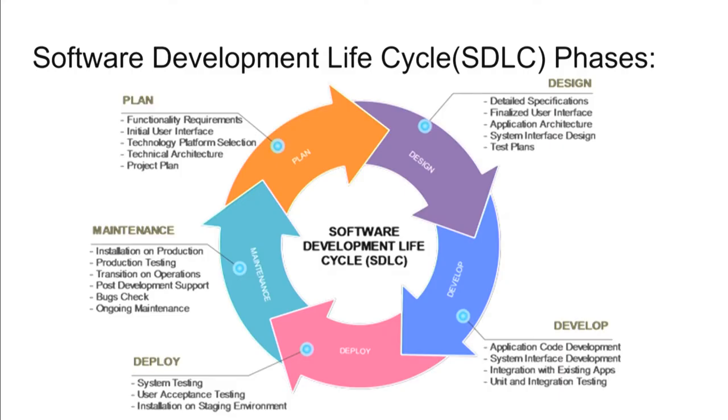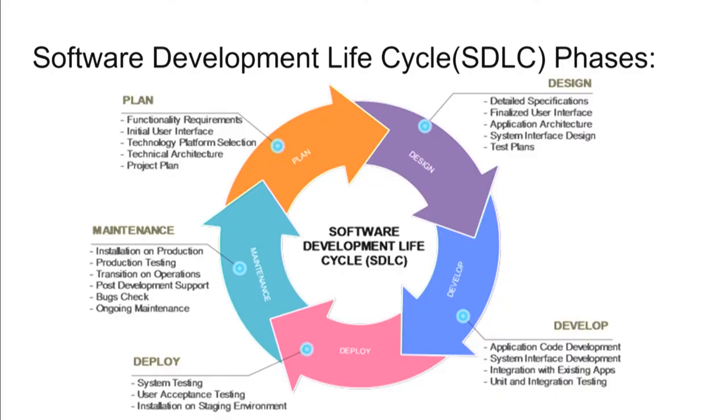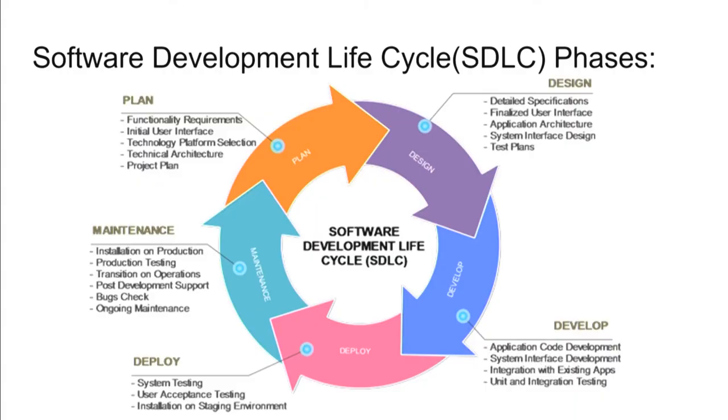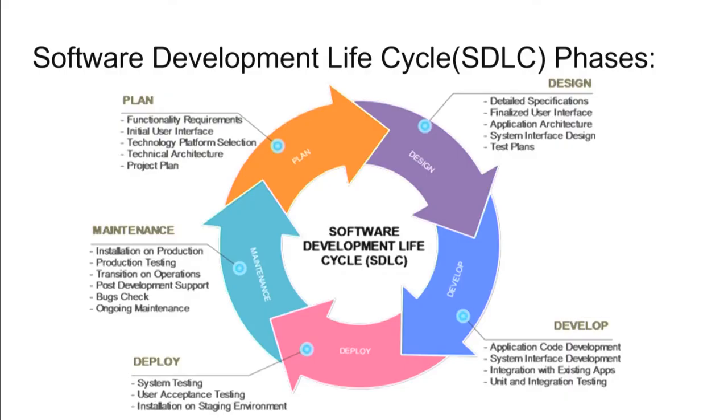Starting with software development life cycle — be it any SDLC, it has certain phases. As mentioned in the previous presentation, there are requirement documents, UML diagrams, and these happen in the planning and design phase. If you want to develop a software, you first find out its feasibility — practical and financial. Then it goes into the design phase, the team codes and develops it, and once functionalities are ready, it goes into deployment and then maintenance — fine tuning, corrections, new versions.